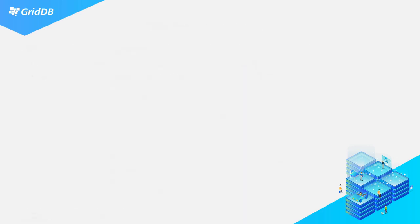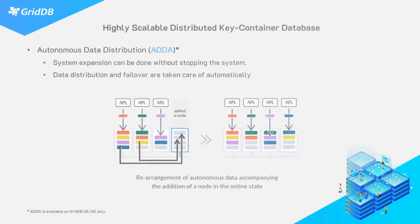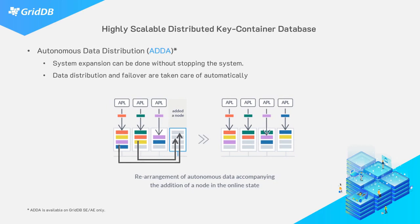GridDB is also highly scalable. It uses a master-slave model which is more efficient than a peer-to-peer cluster. It is able to scale out horizontally with commodity hardware while maintaining the same level of performance. The data is distributed across all nodes and has configurable replication levels. GridDB scalability is also automatic, meaning that you can add more nodes and expand your entire cluster without any stoppage.